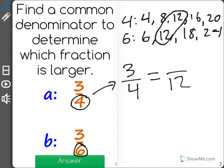I know that to get from 4 to 12, I have to multiply by 3, and whatever I do on the bottom, I have to do to the numerator as well. So, 3 fourths is equal to 9 twelfths.